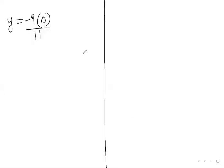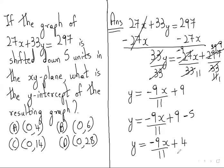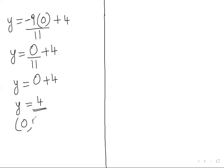y equals minus 9, instead of x we will write 0 upon 11, then plus 4. So y equals minus 9 into 0, it will be 0 upon 11 plus 4. So 0 upon 11 will be 0 only plus 4. So 0 plus 4 will be 4.